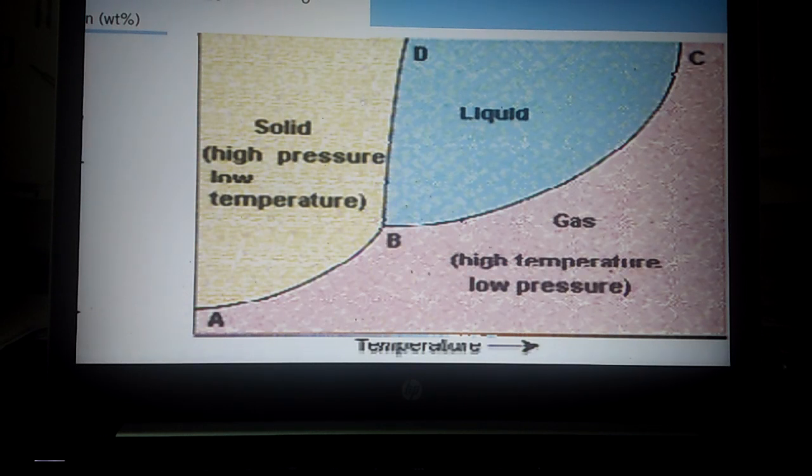This side is solid phase. This is the liquid phase. And right side, this is the gas phase. Here you can see the bottom x-axis is temperature and y-axis is pressure. At a certain temperature, as the temperature is increased, the solid ice melts and becomes liquid.